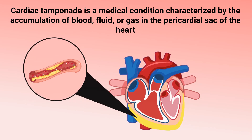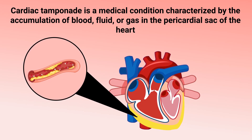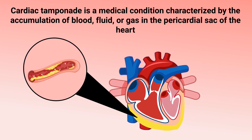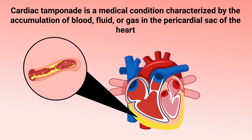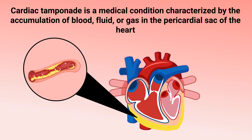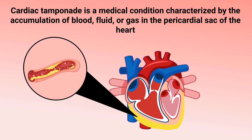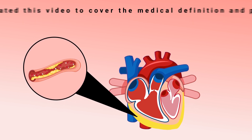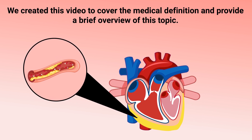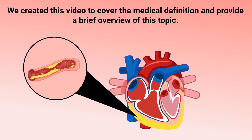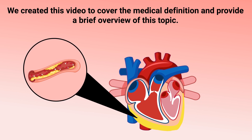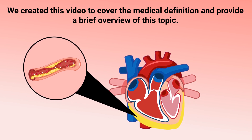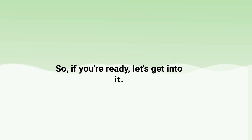Cardiac tamponade is a medical condition characterized by the accumulation of blood, fluid, or gas in the pericardial sac of the heart. We created this video to cover the medical definition and provide a brief overview of this topic, so if you're ready, let's get into it.